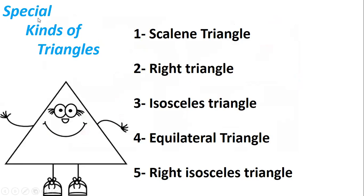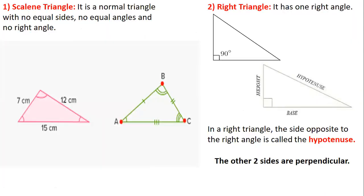Now there are special kinds of triangles. They are special because they have something very special in them. These special kinds are: triangle number 1 — Scalene triangle; triangle number 2 — Right triangle; triangle number 3 — Isosceles triangle; triangle number 4 — Equilateral triangle; and triangle number 5 — Right isosceles triangle. I will talk about each one of them.